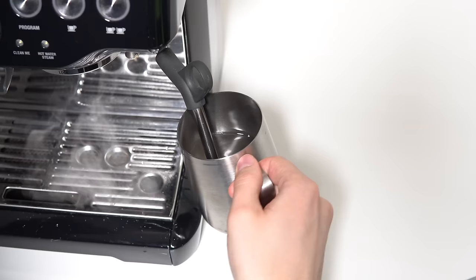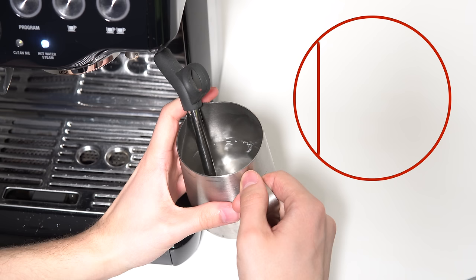The position you should be aiming for in the pitcher is with the tip of the wand a half an inch away from one of the sides, and halfway between the top and bottom of the pitcher. Some people also like to rest the steam wand on the pouring spout to help hold a consistent position.